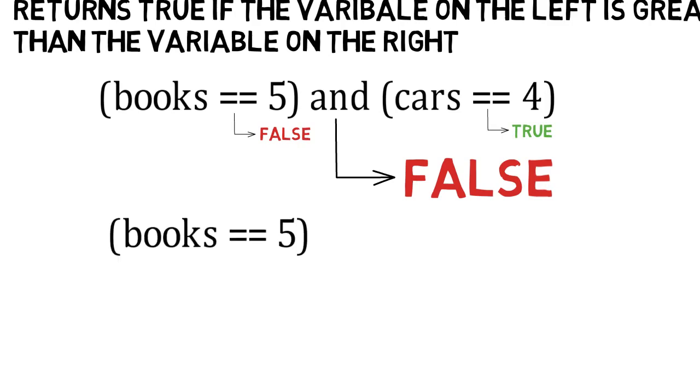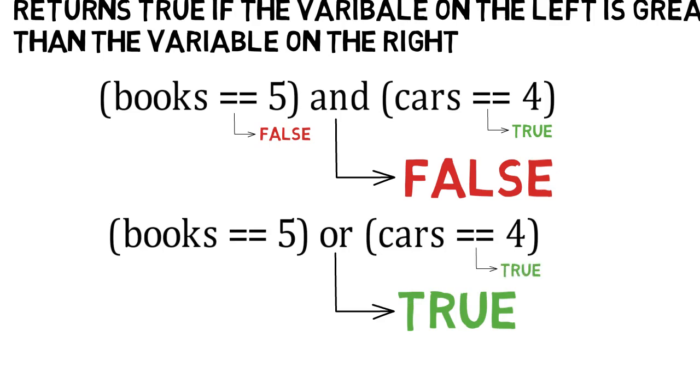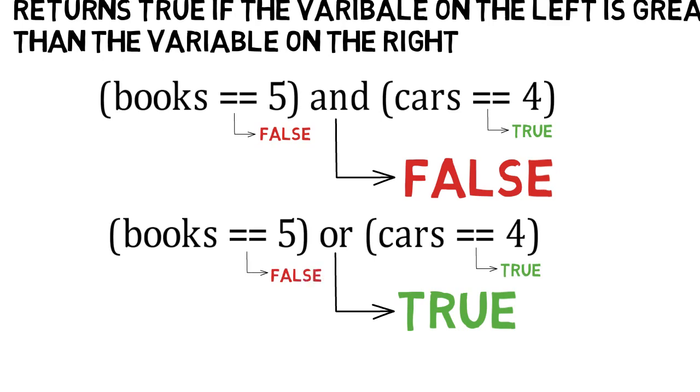Books equals 5 OR cars is equal to 4. This would return true, because cars does equal 4 and only one of the comparisons needs to return true for it to be true.